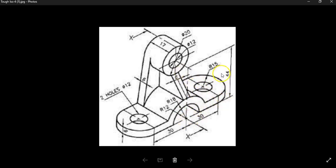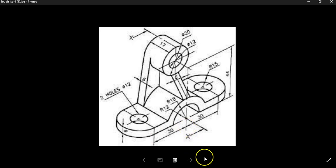If we look at the full width of the object, notice that this is a radius of 15 from the center point, so it's going to be 15 plus 30. The object is going to be symmetrical, so 45 plus 45 is going to be 90. Our first thing to do is draw a line that is 45 to the right and 45 to the left.